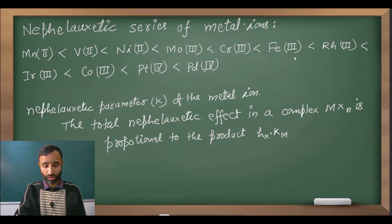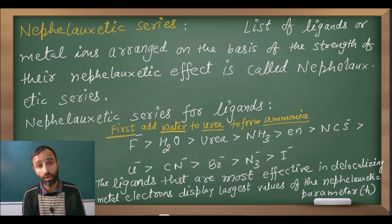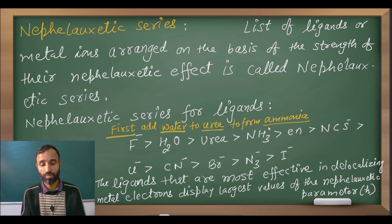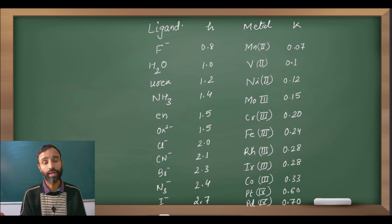As oxidation number increases in most of the cases, the nepheloxetic parameter that is denoted by K for the metal ion increases. And in this case, nepheloxetic parameter of ligands is denoted by H. The total nepheloxetic effect in a complex is proportional to the product of H and K: H for ligand and K for metal ion. So in this way we can calculate the total nepheloxetic effect in a given complex.